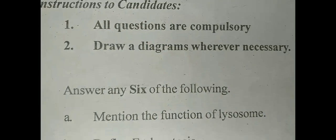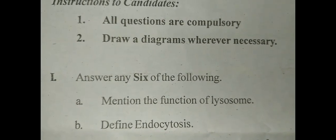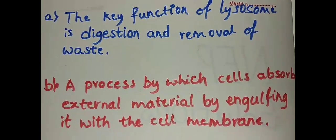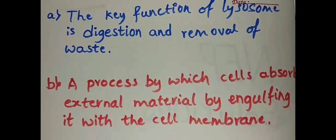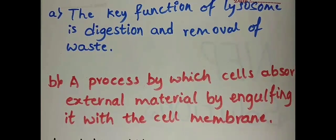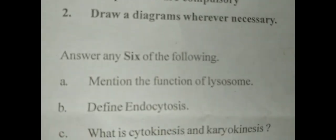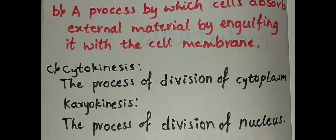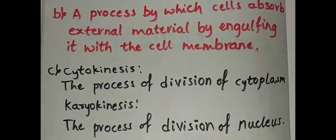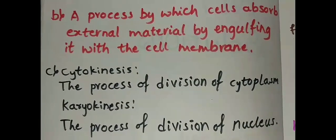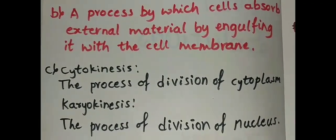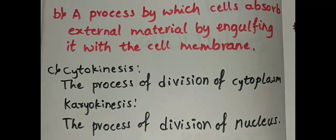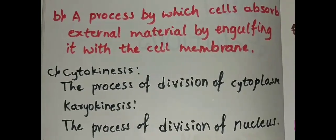The second question is define endocytosis. Endocytosis is a process by which cells absorb external material by engulfing it with the cell membrane. Next third question, what is cytokinesis and karyokinesis? Cytokinesis is the process of division of cytoplasm and karyokinesis is the process of division of nucleus.